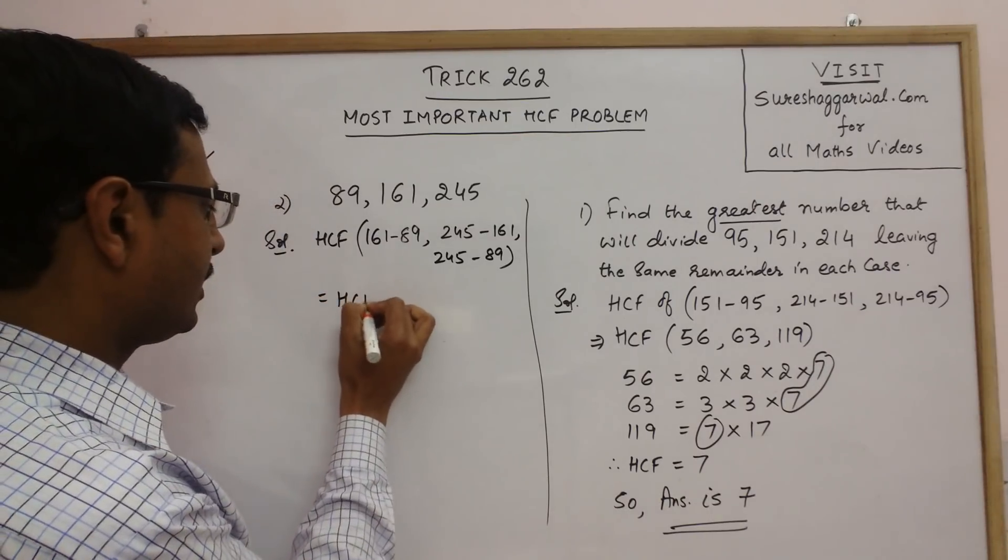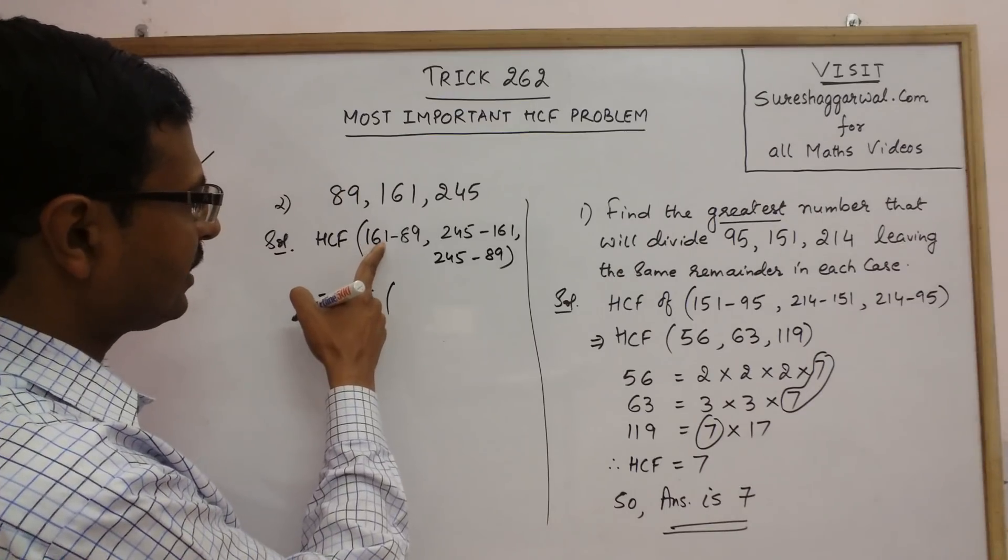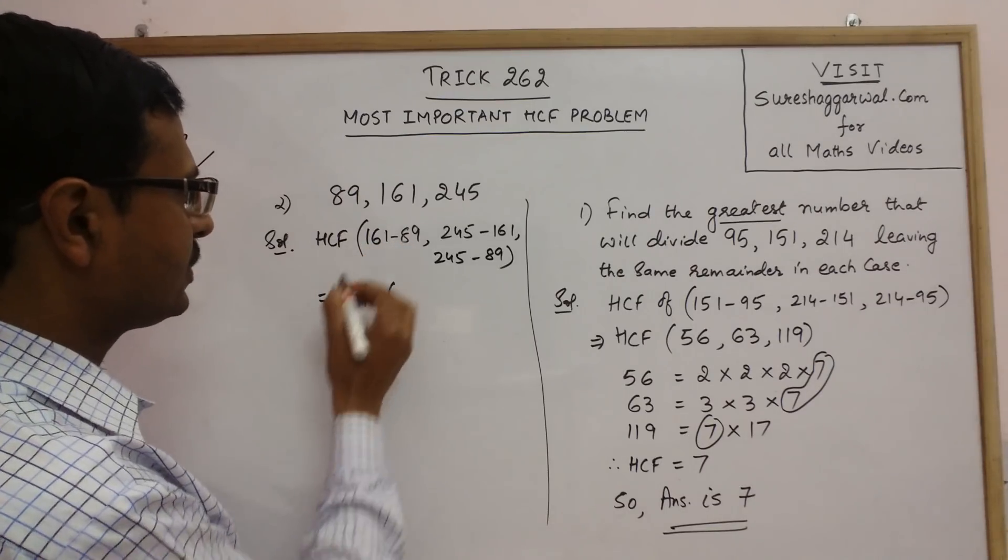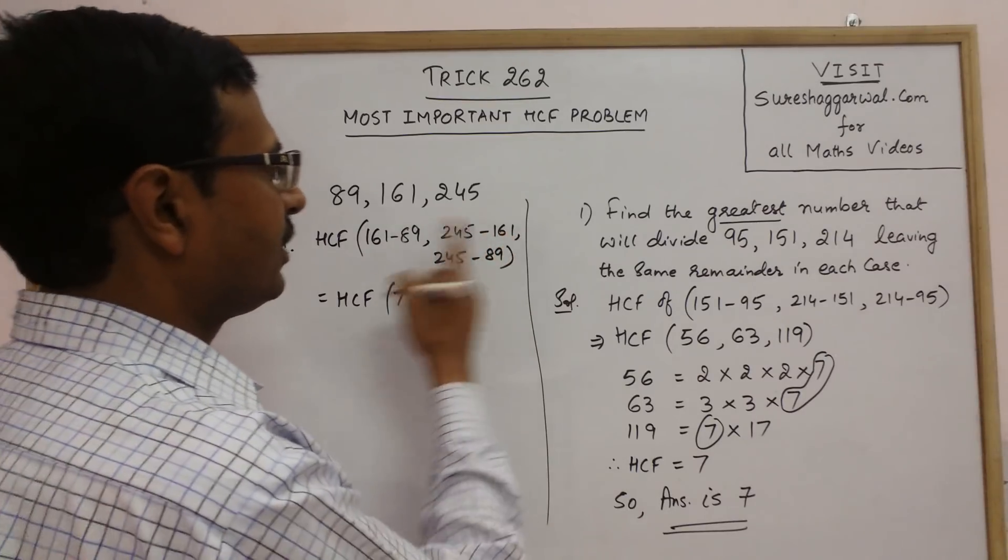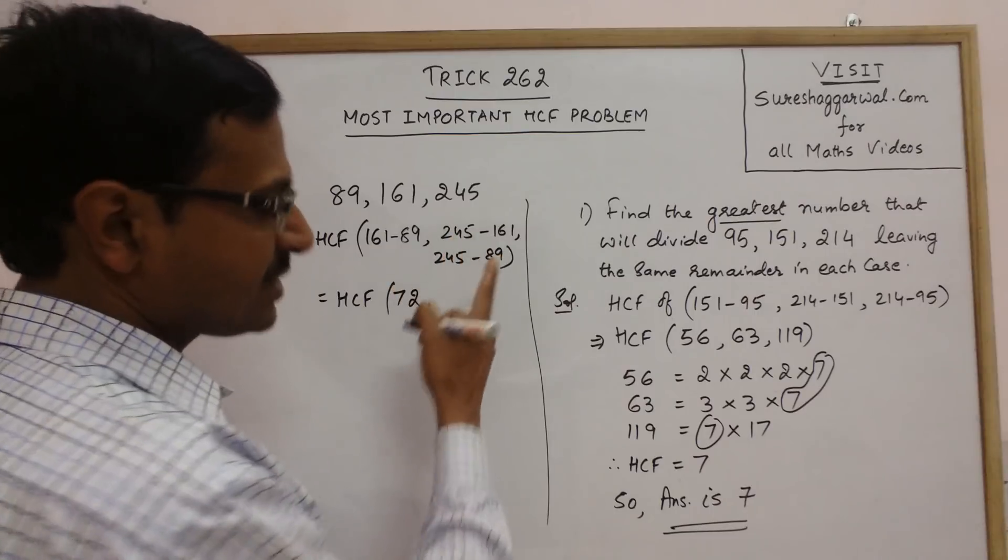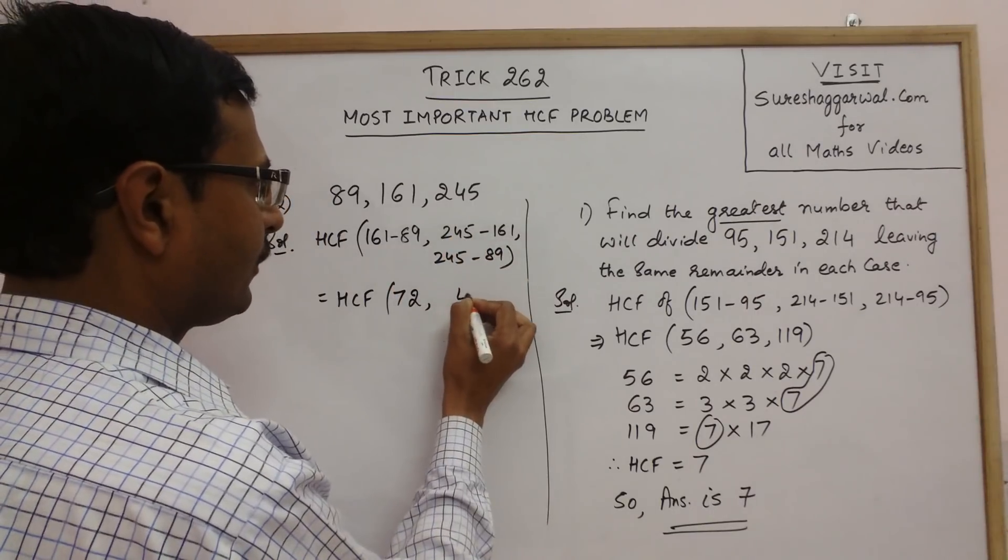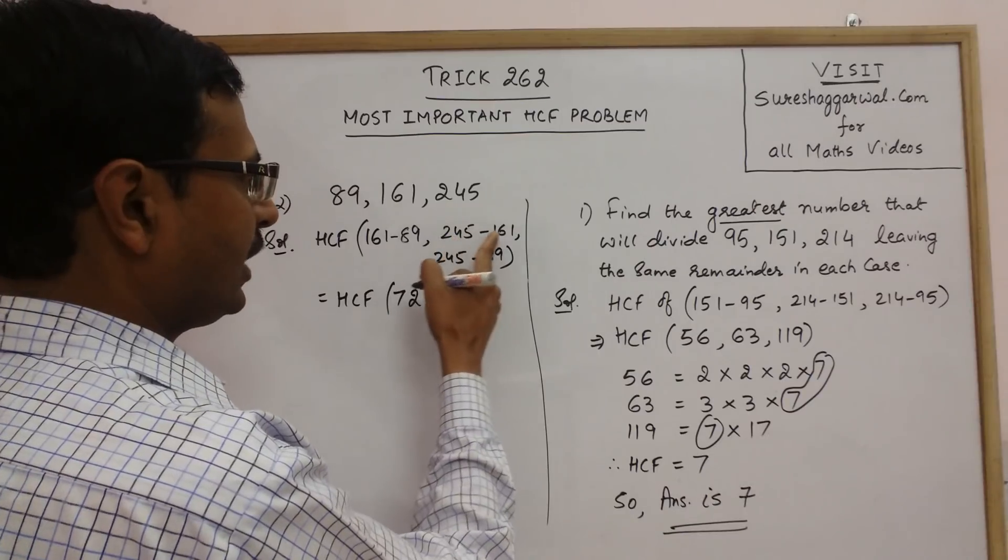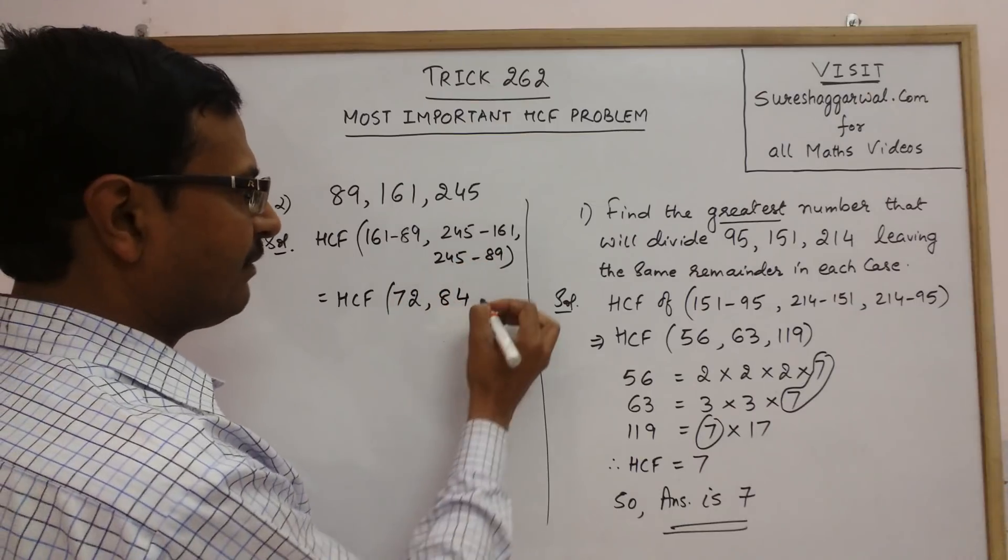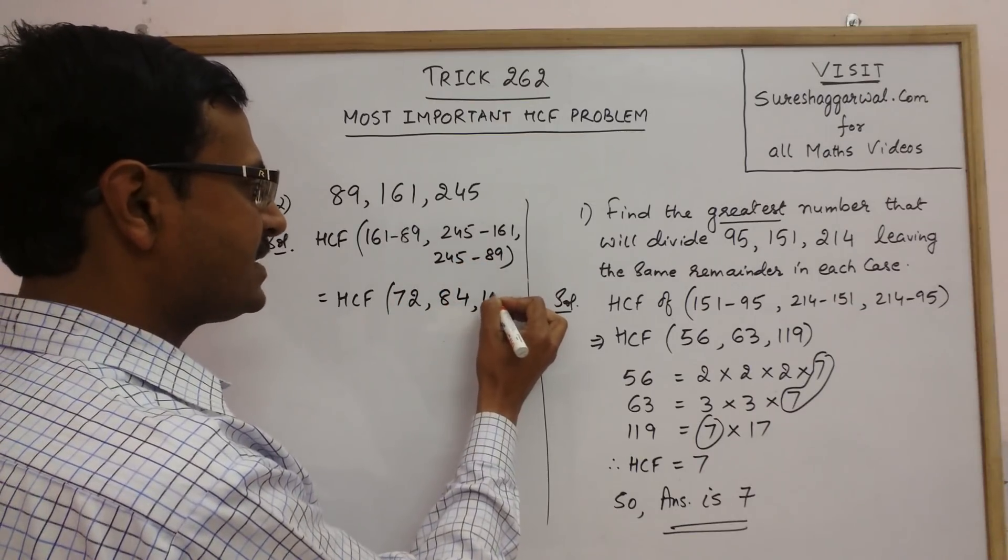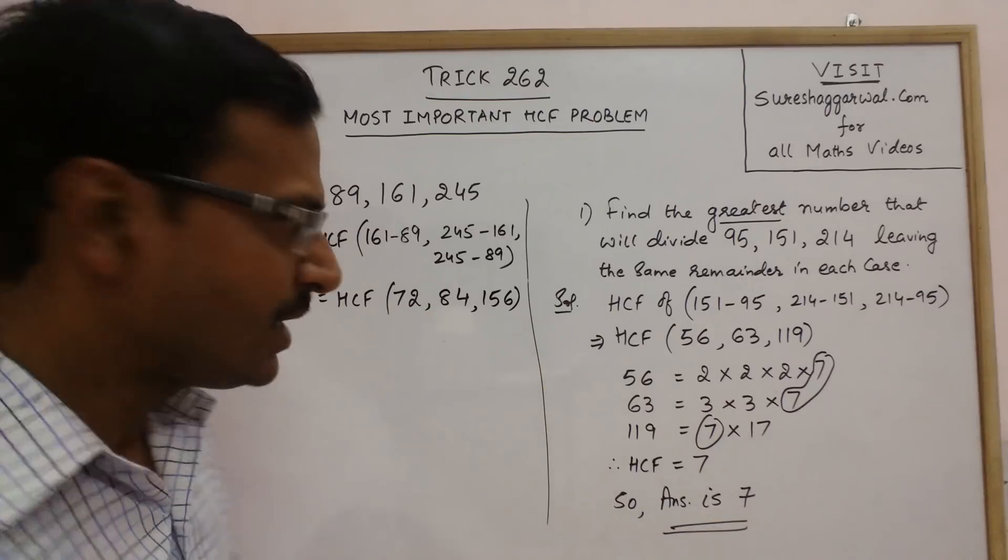The solution as in this case, it is the HCF of 161 minus 89, 245 minus 161, and 245 minus 89. That is the HCF of 72, 84, and 156. So the three differences are 72, 84, and 156.